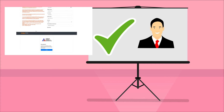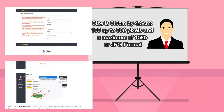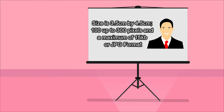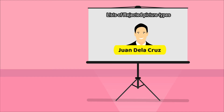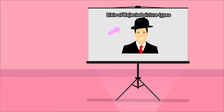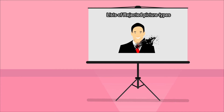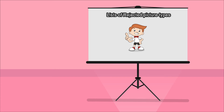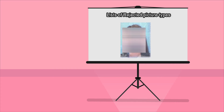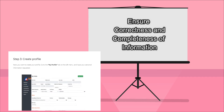Remember that only a white background is accepted — colored background is not acceptable. The photo size is 3.5 cm by 4.5 cm, 100 to 300 pixels, and a maximum of 15 KB in JPG format. These are the types of rejected pictures: 1. with name or nameplate, 2. with borderline, 3. in colored background, 4. with a headdress, 5. upper head does not appear, 6. with stain from stamp or dirty copy, 7. wearing white clothes, 8. wearing eyeglasses, 9. person inside view, 10. picture captured or edited on passport copy. Ensure correctness and completeness of the information provided.